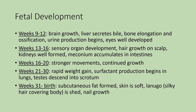Looking at fetal development in more detail: weeks nine through twelve, there is a lot of brain growth, the liver starts to secrete bile, you see elongation of the bones and ossification — the transformation from cartilage to bone — the kidneys begin producing urine, and the eyes become well developed. Weeks thirteen to sixteen, there is a lot of sensory organ development — eyes, ears, etc. You can now see some hair growth on the scalp, the kidneys are well formed, and meconium begins accumulating in the intestines.